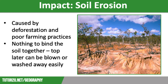Poor farming practices also lead to soil erosion. Overgrazing means that animals trample the land and strip the vegetation, leaving nothing to bind the soil together. Overcultivation means the land is exhausted of water and nutrients so it completely dries out, meaning it can be blown or washed away much more easily. Together, deforestation and poor farming practices are a huge cause of desertification, which therefore causes soil erosion.